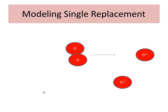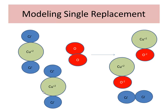Here's a model of a single replacement reaction. You have copper 2 chloride reacting with oxygen. The copper goes with the oxygen and leaves chlorine alone. There should be another chlorine there. You can see how the copper — the positive — goes with the element oxygen to form copper oxide. It's important that the ones with the opposite charges go together.